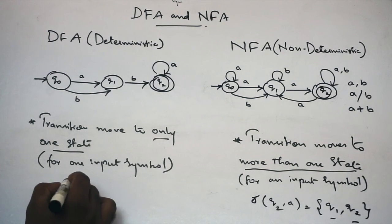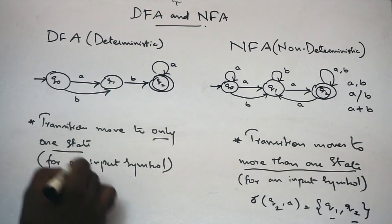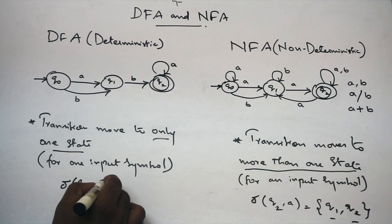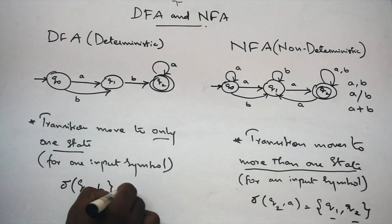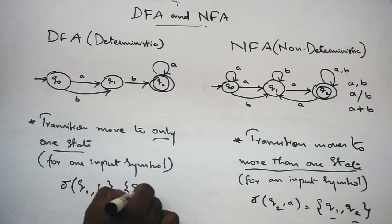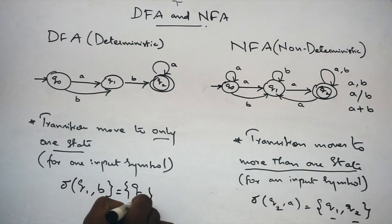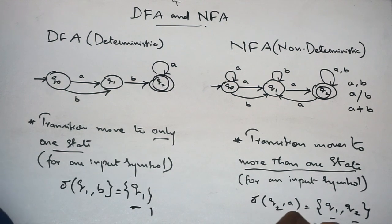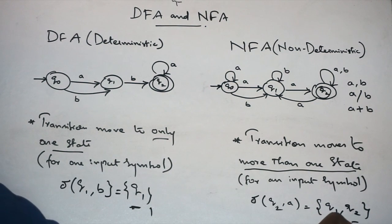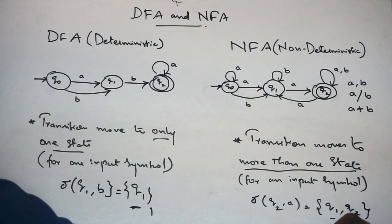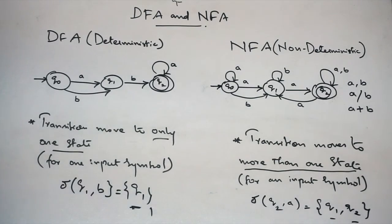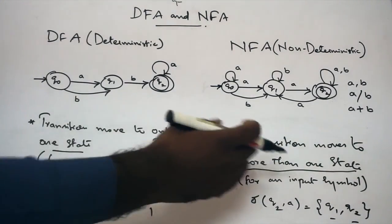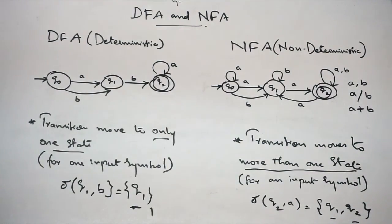If you read any transitions — for example, where there's a state, here Q1 on A gives Q2 — so Q1 and Q2 together is more than one state. That is the defined point of view for NFA.